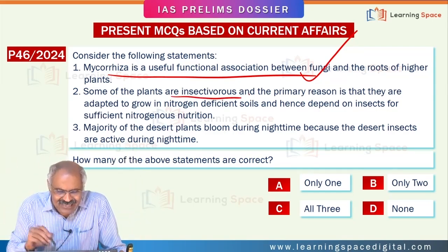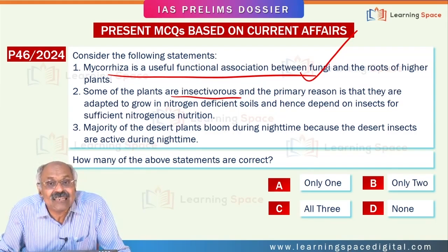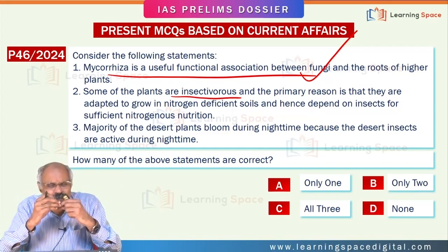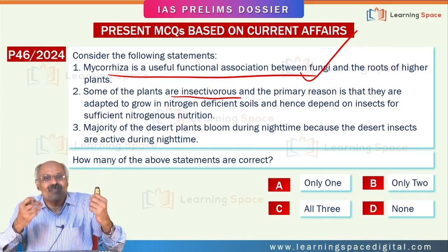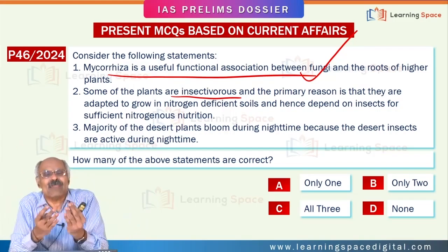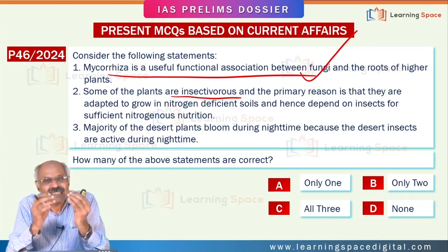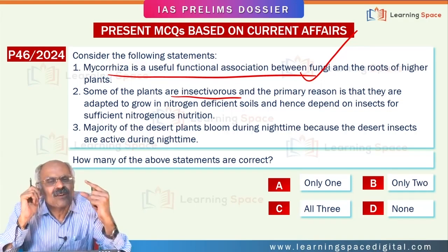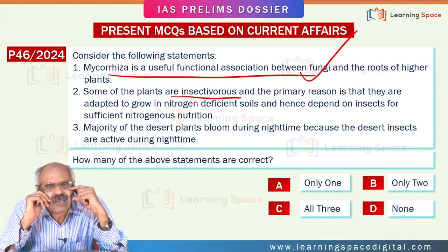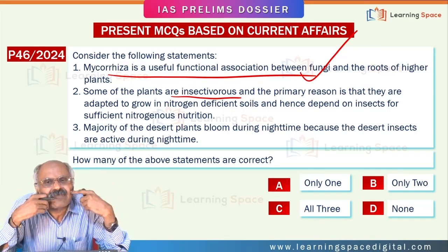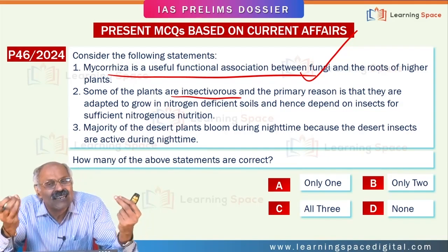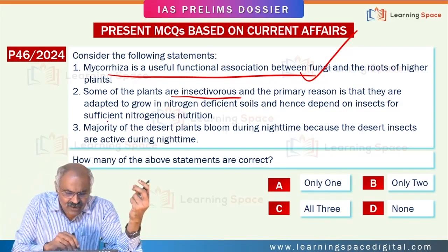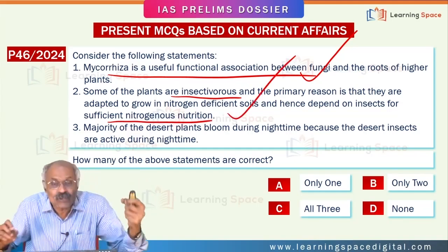Some plants are insectivorous. Insectivorous plants, through various mechanisms, trap and eat insects. These insectivorous plants are normally grown in waterlogged areas, what you call bogs. In those areas, the soils are deficient in many nutrients, especially nitrogen. So they depend on insects for nitrogenous nutrition.